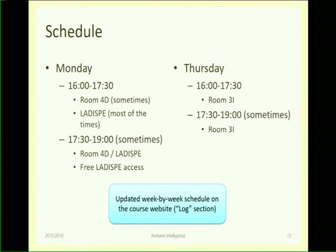The schedule: we have four slots per week — two on Monday and two on Thursdays — but we won't use all of them every week. In some weeks we use four slots, in others only three or two. On Monday, sometimes we'll be in the classroom and sometimes in the lab. The lab — La Dispre — is right behind room number 12 on the ground floor. So sometimes we'll be here and sometimes in La Dispre, depending on the week and the topic.